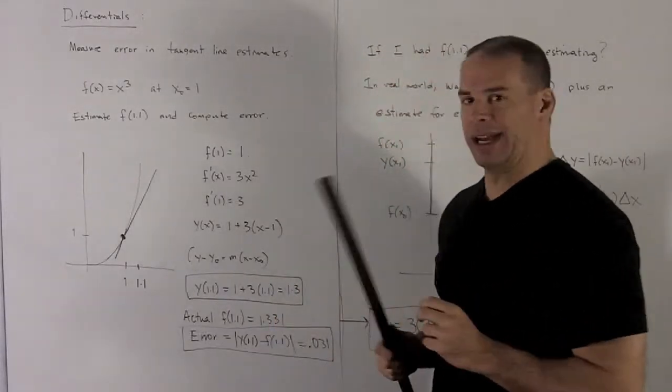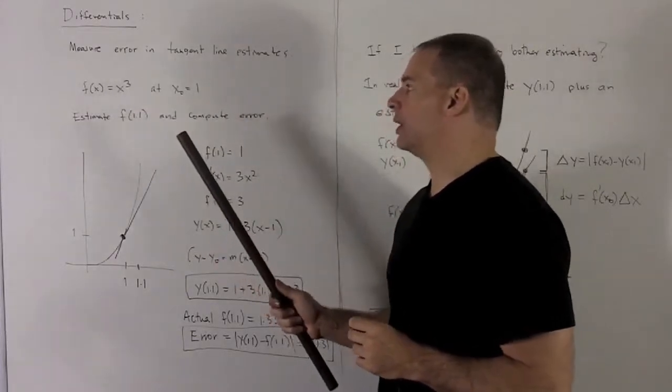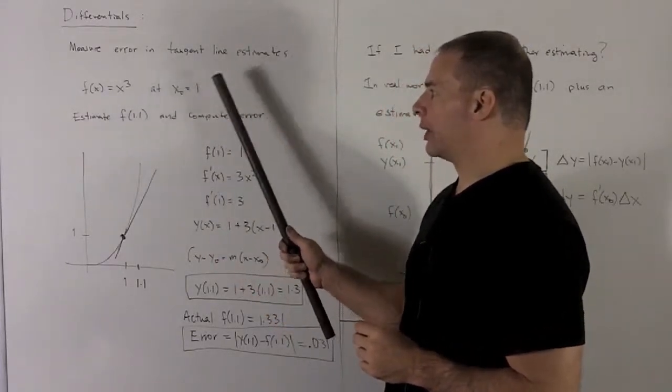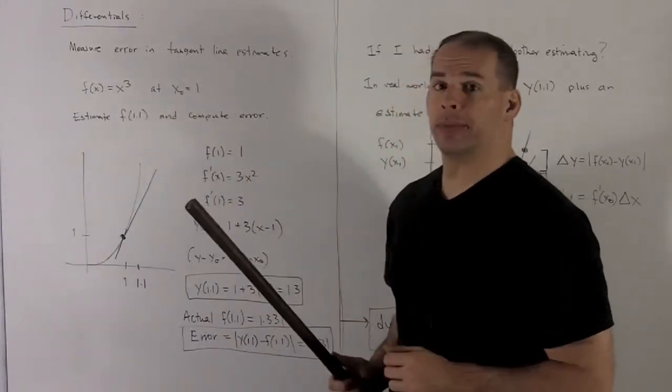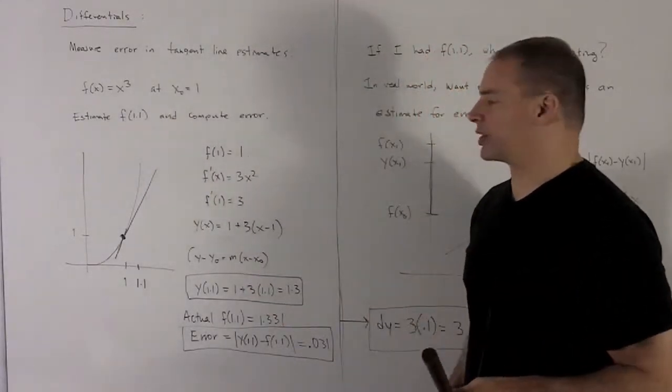So let's look at an example. I'm going to take my function x cubed at the point x0 equal to 1. I want to estimate f(1.1) using the tangent line and compute the error in that estimate.